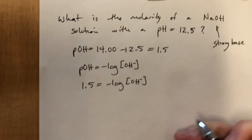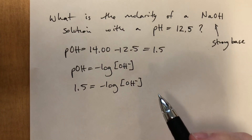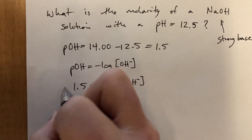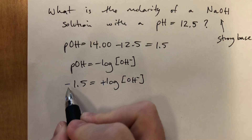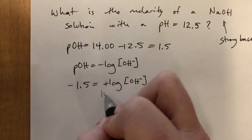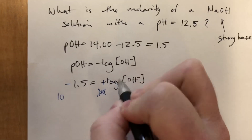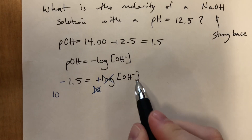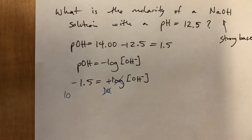Just like we did for the strong acid a moment ago, we're going to get rid of the negative first by multiplying by negative 1 on both sides — this becomes positive, this becomes negative. To get rid of the log base 10, we do 10 to the whatever on both sides. Those cancel out, and the concentration of OH⁻ is equal to 10 to the negative 1.5.